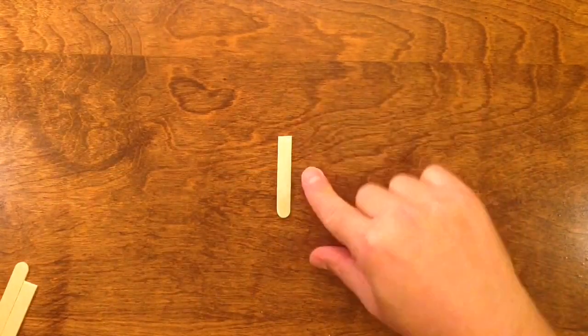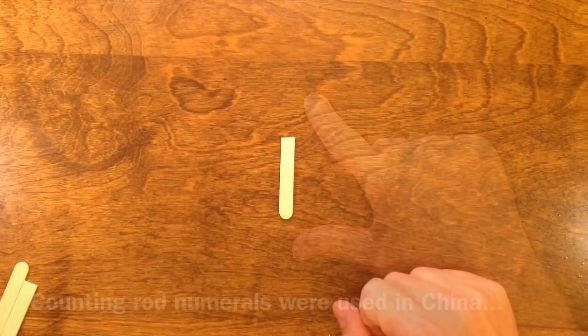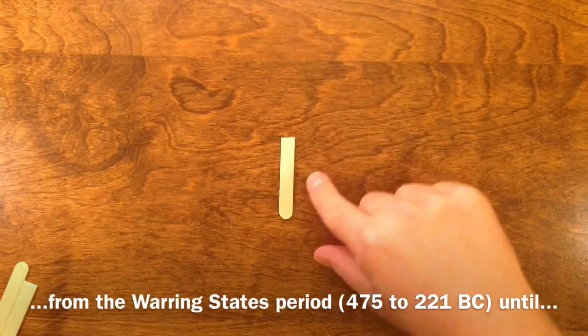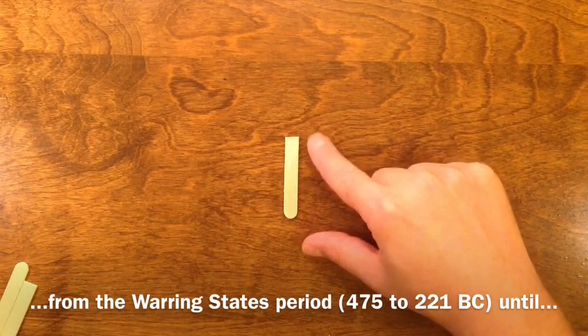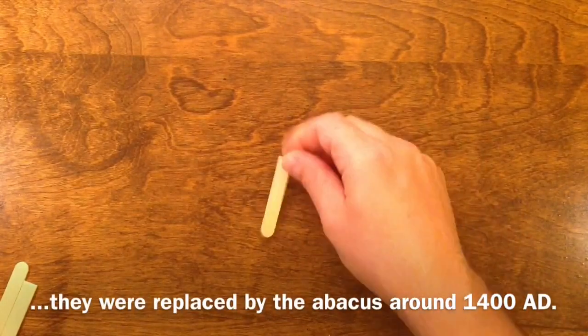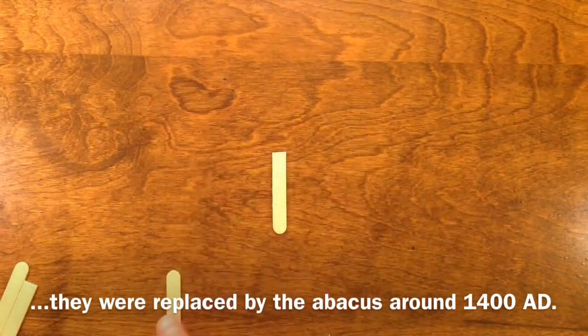Counting rods were short, wooden or bamboo, sometimes they were made out of jade or ivory. Initially they were about 6 inches long, but then they were a little bit shorter in the end. Ultimately they were about 3 inches. These are half popsicle sticks I'm going to use for the demonstration. They're about 2 inches long, so they're a little shorter.